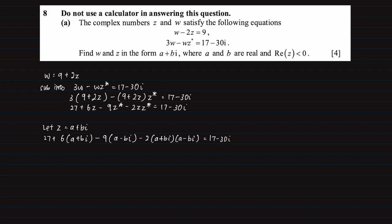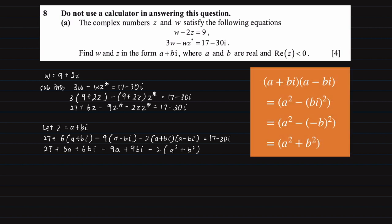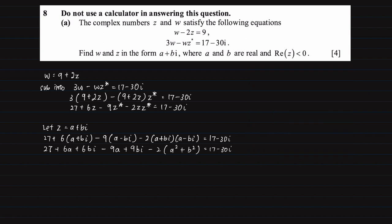Now if you're wondering what to do next we are going to be very careful. Expanding we will have 27 + 6a + 6bi - 9a, be very careful here, plus 9bi minus 2(a² + b²). Now if you're not sure how we got this, it's from the difference of squares formula but because of the i we actually have a² + b², and this gives us 17 minus 30i.